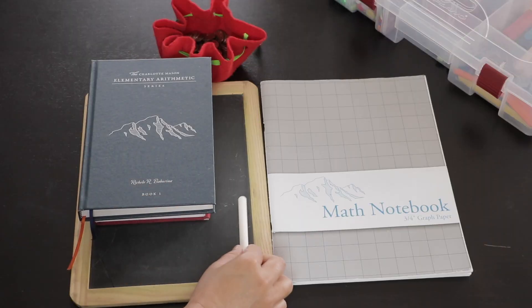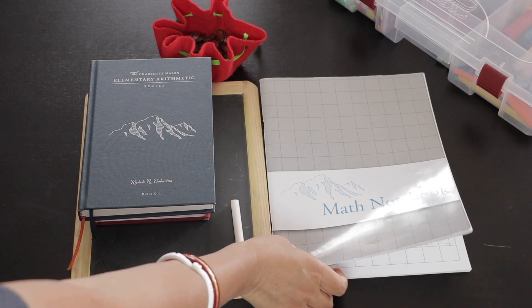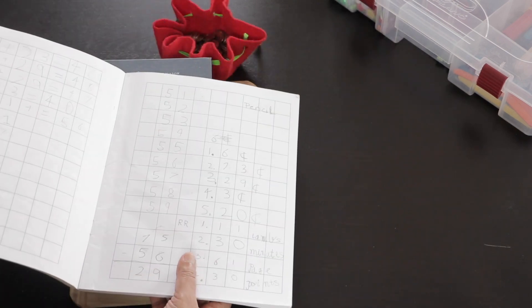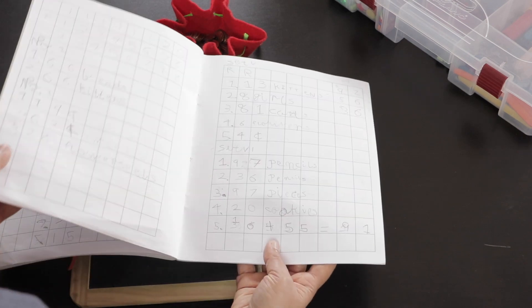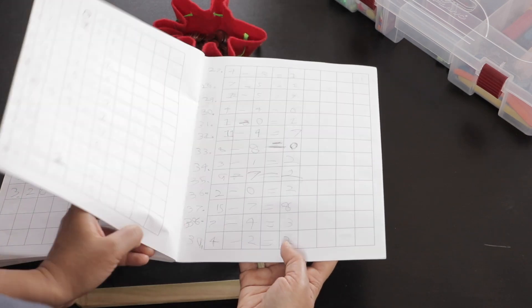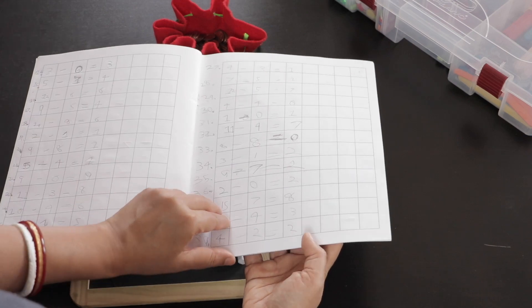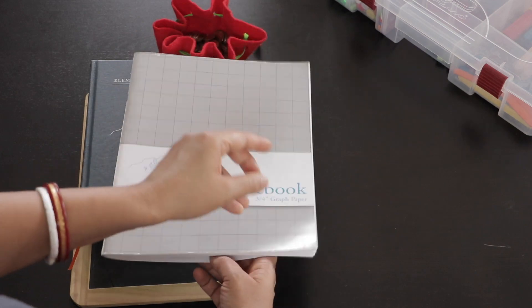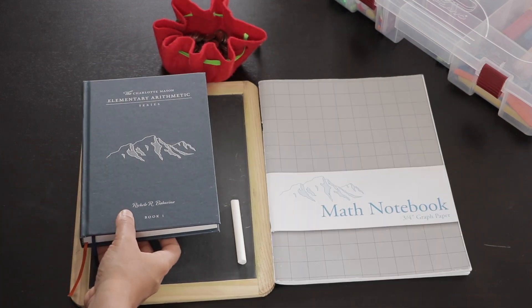Now my son either uses chalk and slate to do the maths or a graded math copy occasionally. Writing the numbers or equations is not very often done in Charlotte Mason math. In the initial years of learning math, the importance is given more to knowing the numbers than putting stress on writing.